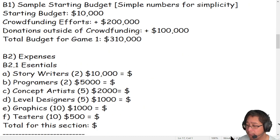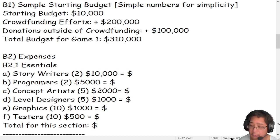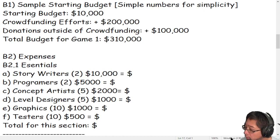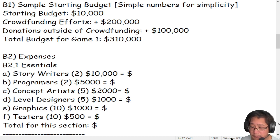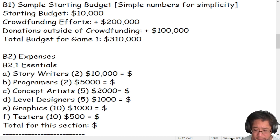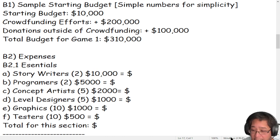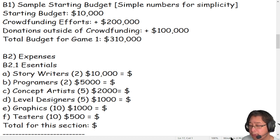Now we're going to spend some money. We need story writers, programmers, concept artists, level designers, and graphic designers. The numbers in parentheses mean how many people are in that department — for example, how many level designers are in the level design department. We have five people in our little sample studio, and our staff totals 34 people for this section.